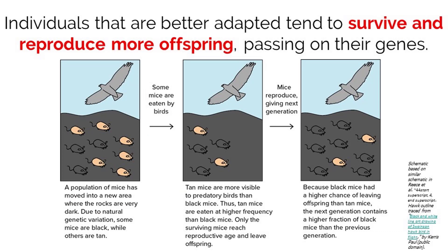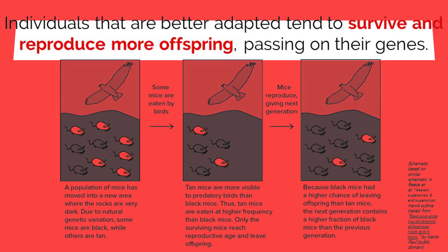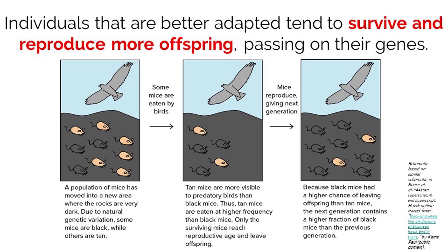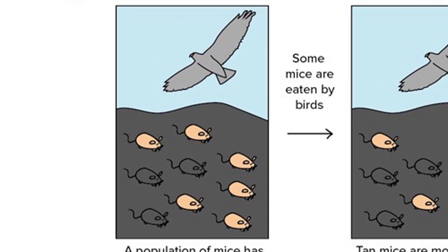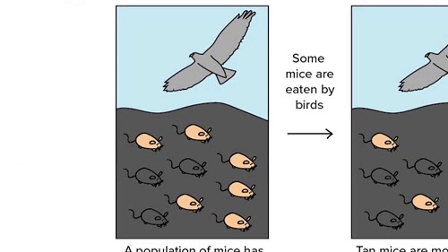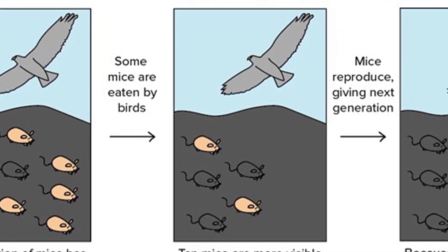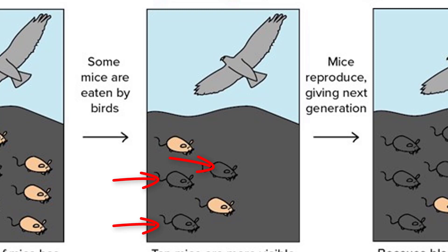The last step is essentially putting all of the pieces together for selection to take place naturally. Individuals that are better adapted to their environment tend to survive and reproduce more offspring, passing on their genes to the next generation. For example, there is a population of mice that live on dark rocks and possess variation in their fur color. The black mice have a beneficial adaptation based on the environment being a darker color. There is competition between the mice for food, meaning they must expose themselves to forage. The selection happens with their predator, the bird, which can better see the lighter mice because they stand out against the dark environment. This means the darker mice will survive at a higher frequency and reproduce, passing their genes on to their offspring.